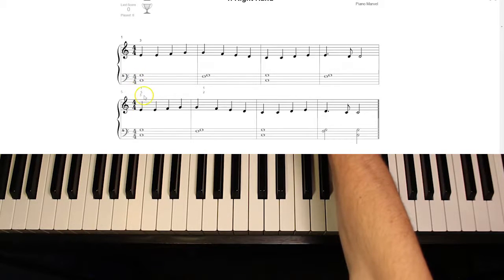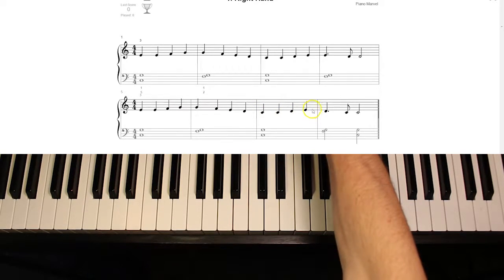Now the second line repeats. It does the exact same thing. E, E, F, G, G, F, E, D, C, C, D, E, except for here. Here's where it's different. Instead of going E, D, D, you go D, C, C. Okay?